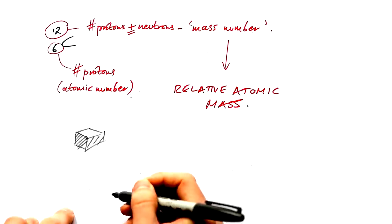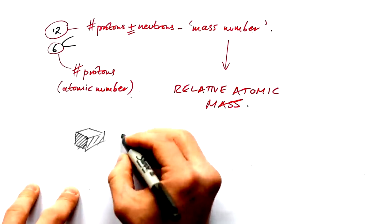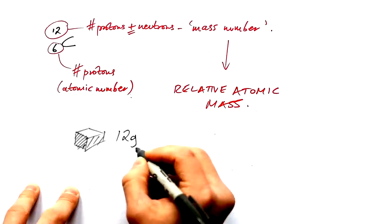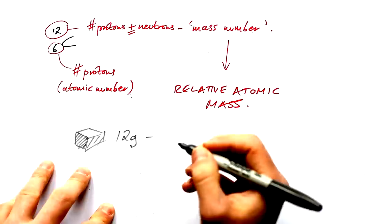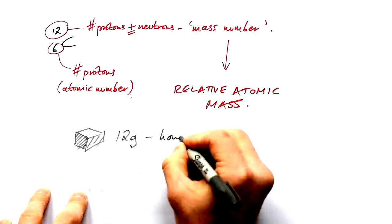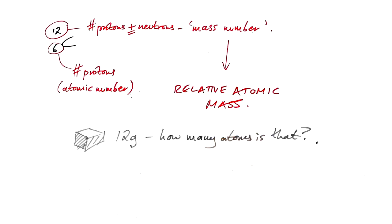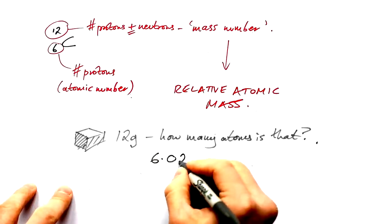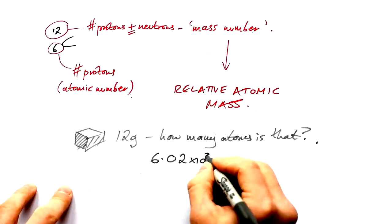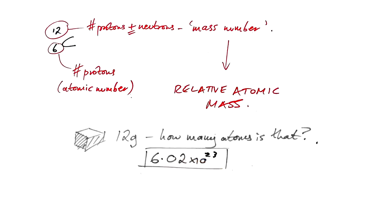So let's say that we have just a block of carbon. And let's say this block is 12 grams. Scientists asked the question then, how many atoms is that? And they did experiments to find out just how many atoms were in this 12 grams of carbon. And they found that it's 6.02 times 10 to the 23. That is a lot of atoms. That's 6.02 with another 21 zeros afterwards. That's an insanely big number.